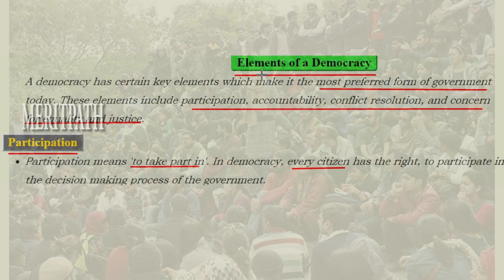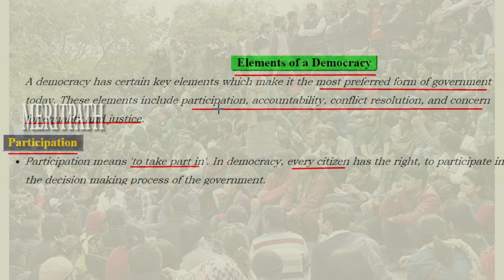Let's discuss the elements of democracy. As we are all aware, India is a democratic government. Democracy has certain key elements which make it the most preferred form of government today. In the world, democracy is the most preferred form of government. The key elements that come under democracy are: participation, accountability, conflict resolution, and concern for equality and justice.